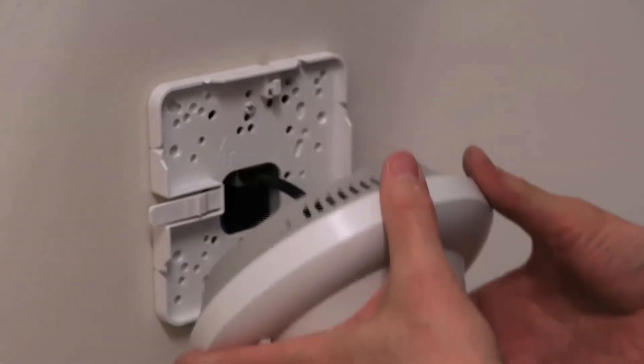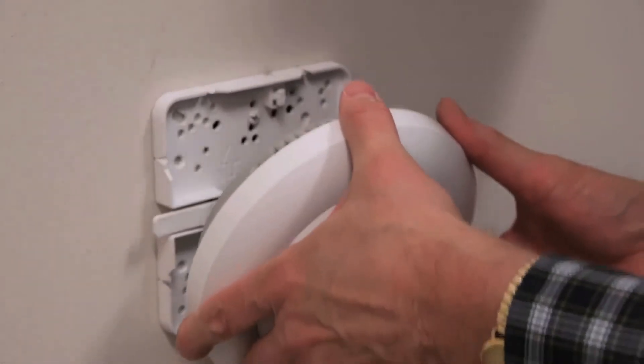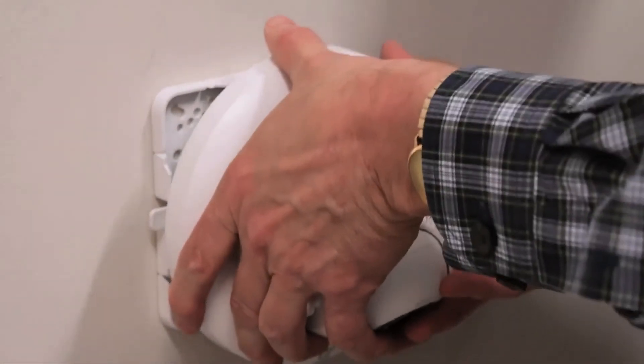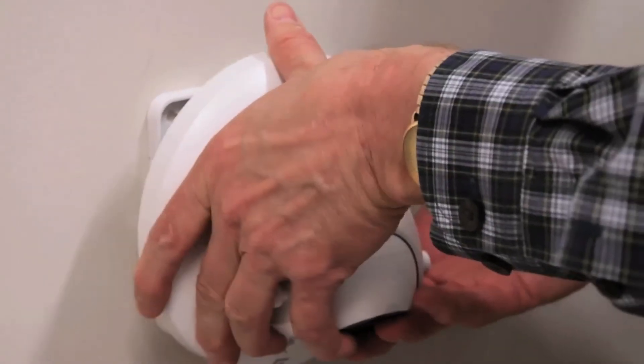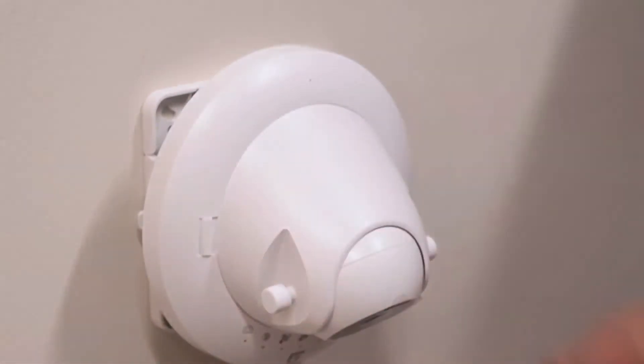Tighten the screws to 7 inch pounds. Lastly, attach the AP to the bracket as shown for the wall. Don't forget to make sure it is securely attached.